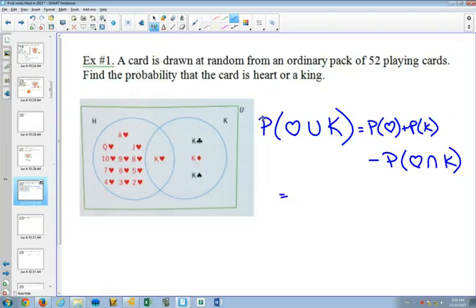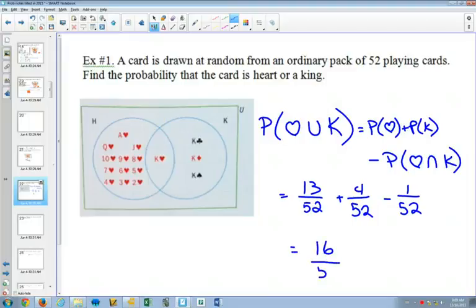Now, from the formula, it would say I have 13 out of 52 are hearts, plus 4 out of the 52 are kings, minus 1 out of the 52, because that is the king of hearts. And my chances are 16 out of 52, or 8 out of 26, or 4 out of 13. So for this one, you'd probably be able to think through it, but it's nice to see how the formula would work.